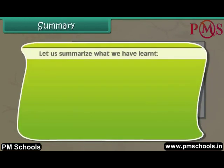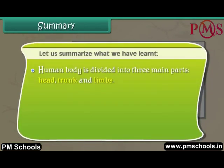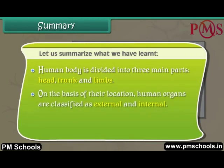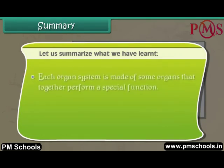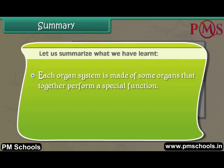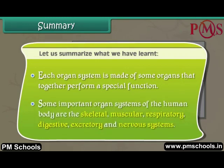Let us summarize what we have learned. The human body is divided into three main parts: head, trunk and limbs. On the basis of their location, human organs are classified as external and internal. Eyes, ears, nose, tongue and skin are the five sense organs of the human body. Each organ system is made of organs that together perform a special function. Some important organ systems are the skeletal, muscular, respiratory, digestive, excretory and nervous system.